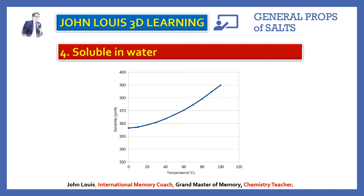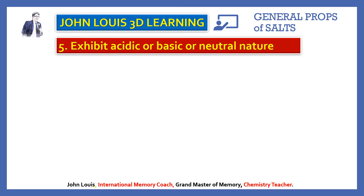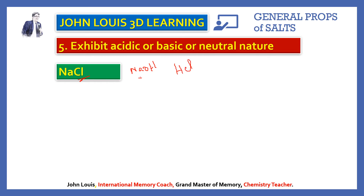The last property is salts exhibit acidic, basic, or neutral nature, depending on whether the salt is formed from a strong acid, weak acid, strong base, or weak base. For example, sodium chloride: sodium comes from the strong base sodium hydroxide, and chloride comes from the strong acid hydrochloric acid. The positive ion from the base combines with the negative ion of the acid to form sodium chloride. Since both came from strong acid and strong base, the aqueous solution will be neutral.